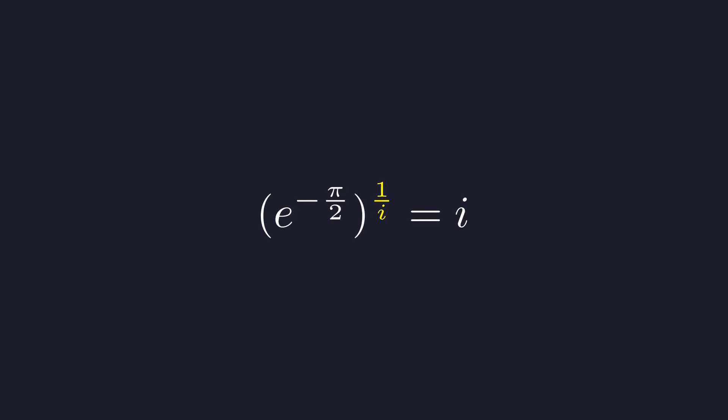First, let's simplify that exponent. What is 1 over i? We can multiply by i over i, which is just 1. This gives us i over i squared. And since i squared is negative 1, we get i over negative 1. So 1 over i is simply negative i. Let's substitute that back in.